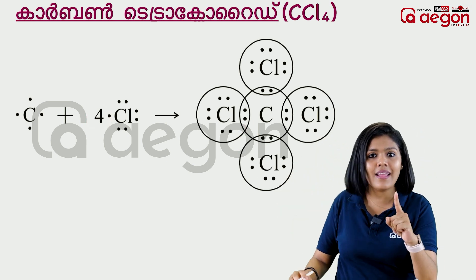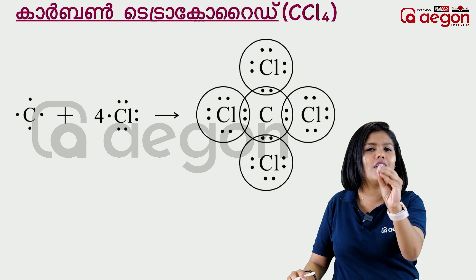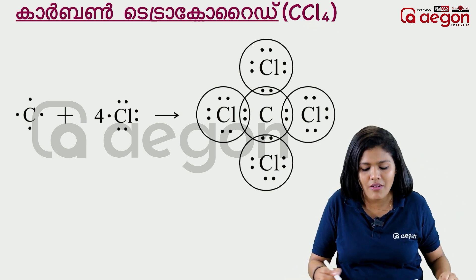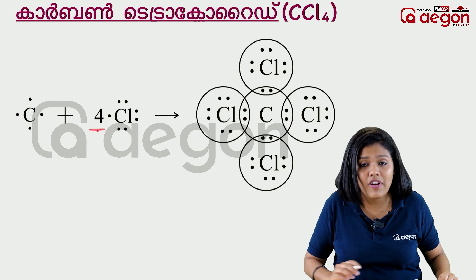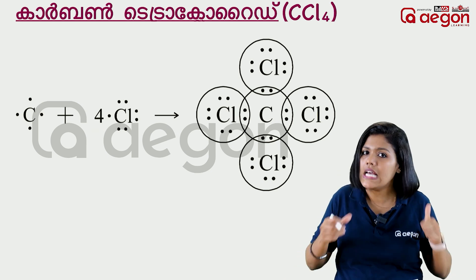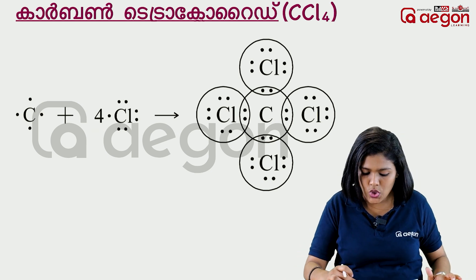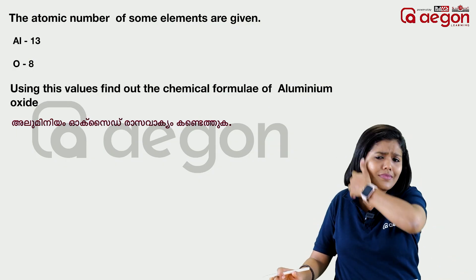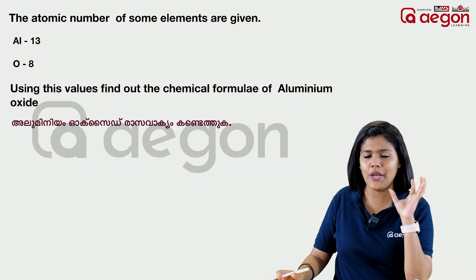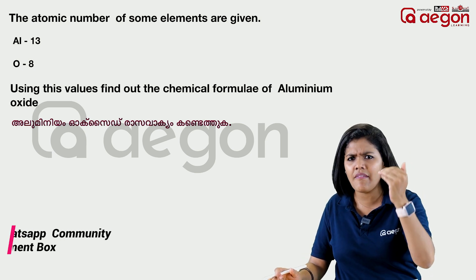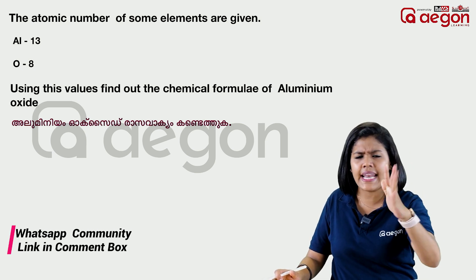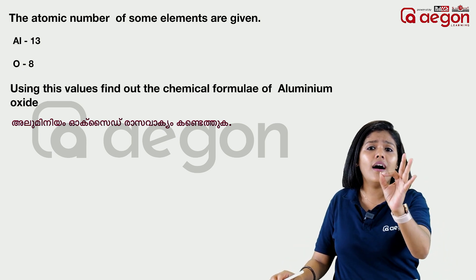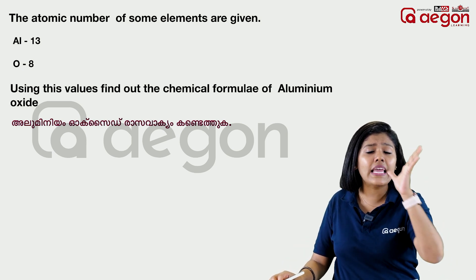In the electron dot diagram of CCl4, Carbon shares with 4 Chlorine atoms. Cl4 — there are 4 Chlorine atoms. We look at two elements' atomic numbers and their valences to determine the chemical compound formula.